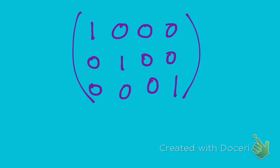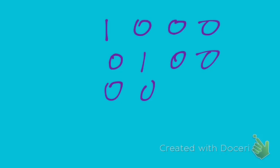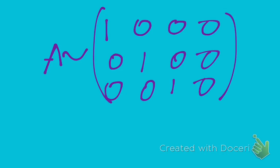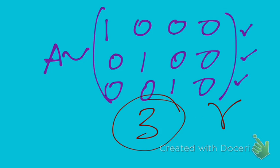This is a matrix in which there is just a single one in each row. By convention, we interchange C3 and C4 so that all the ones are grouped together. So the final matrix is: 1, 0, 0, 0 / 0, 1, 0, 0 / 0, 0, 1, 0. This is the normal form of matrix A. Now, how many non-zero rows are there? One, two, three — there are three non-zero rows, so the rank of the matrix is 3.